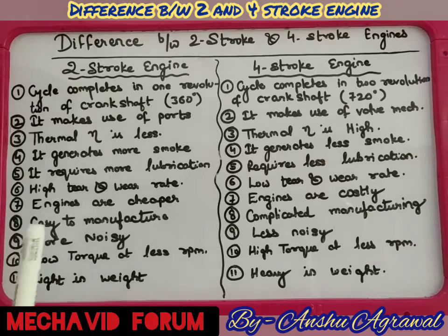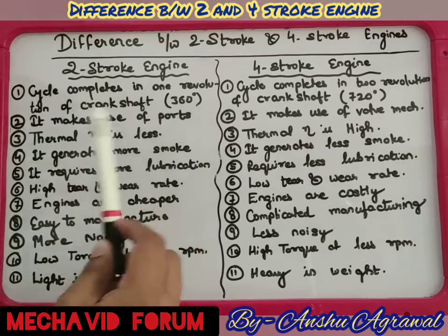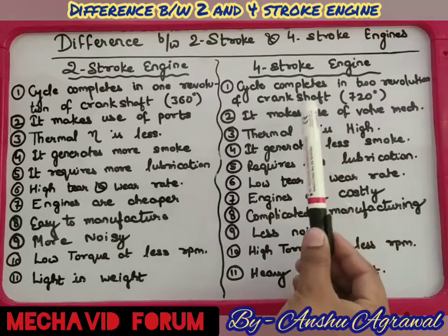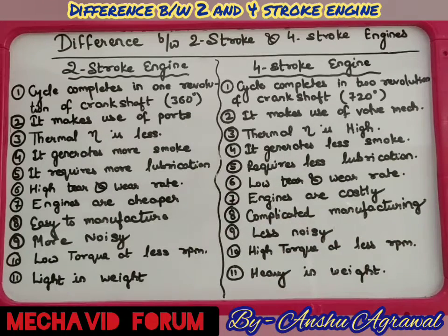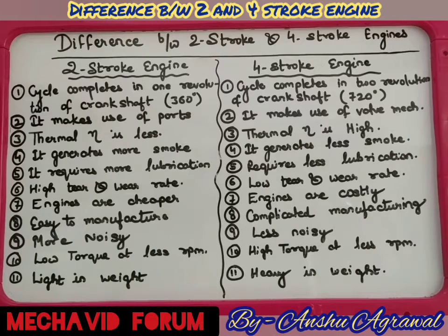The second difference is that a two-stroke engine makes use of ports, while a four-stroke engine makes use of a valve mechanism. In the diagram, a two-stroke engine has an inlet port and an outlet port, while a four-stroke engine has a valve mechanism operated by the crankshaft — with an inlet valve and an exhaust valve. Valves are more efficient and convenient compared to ports.